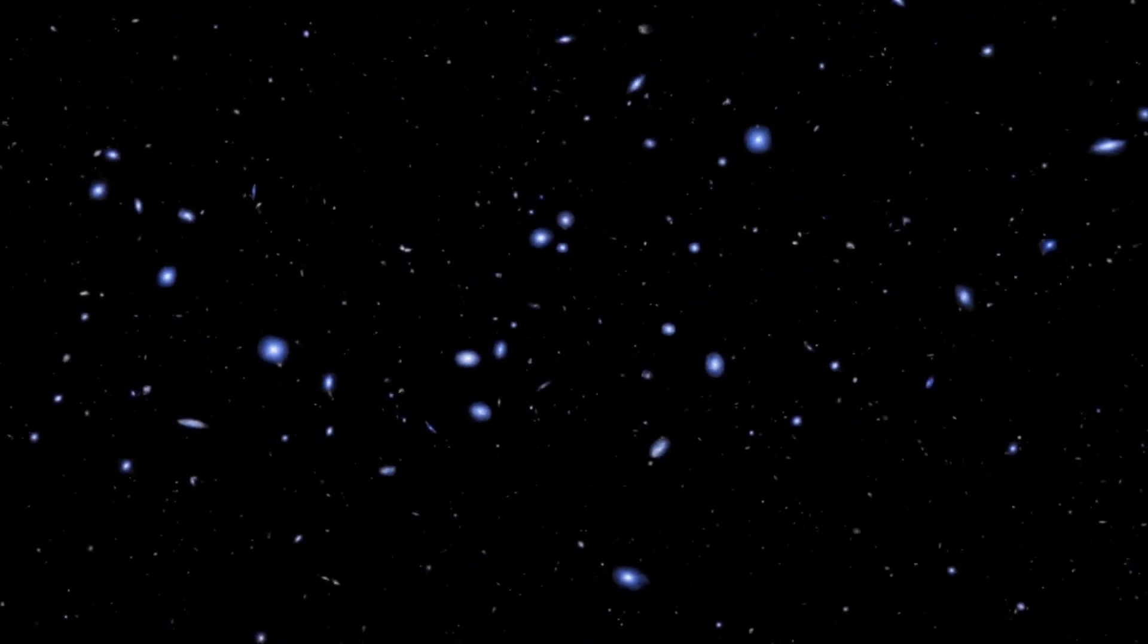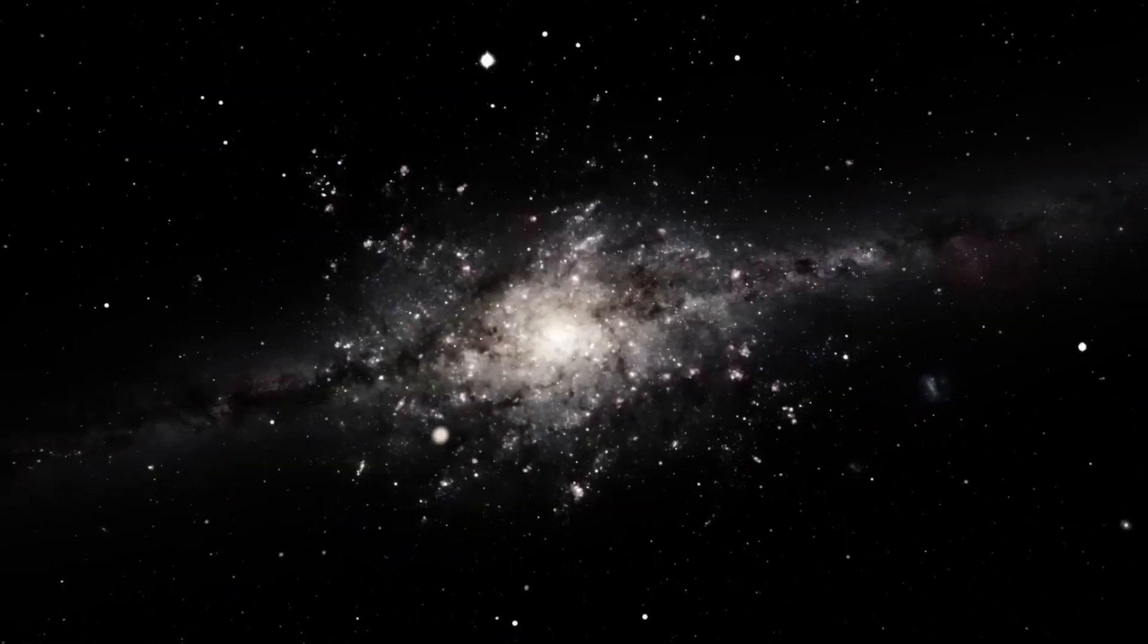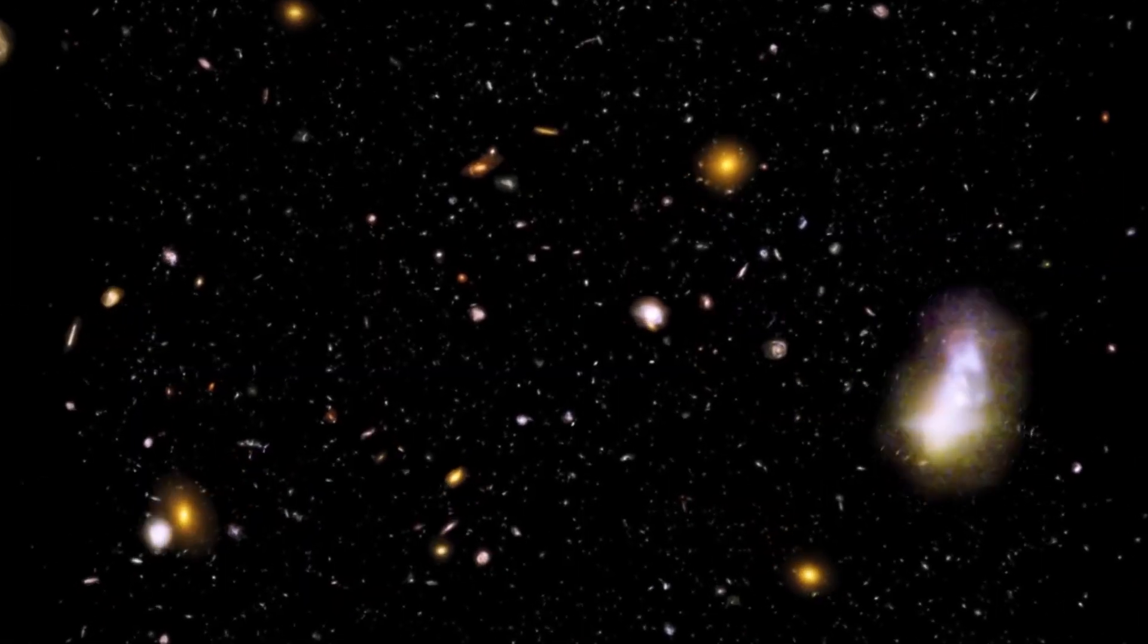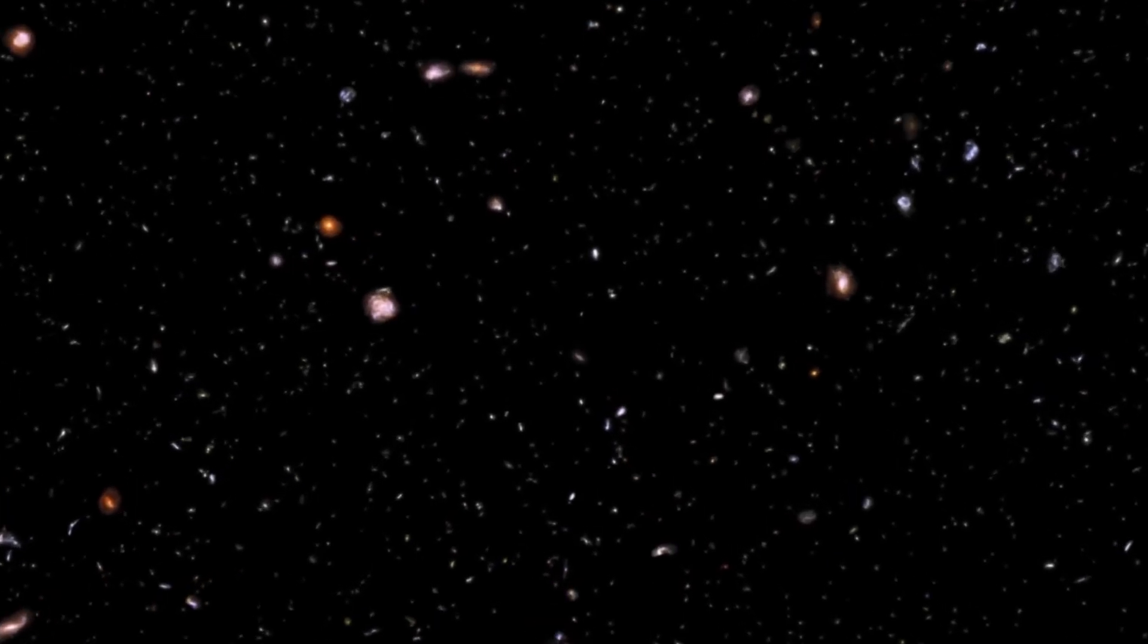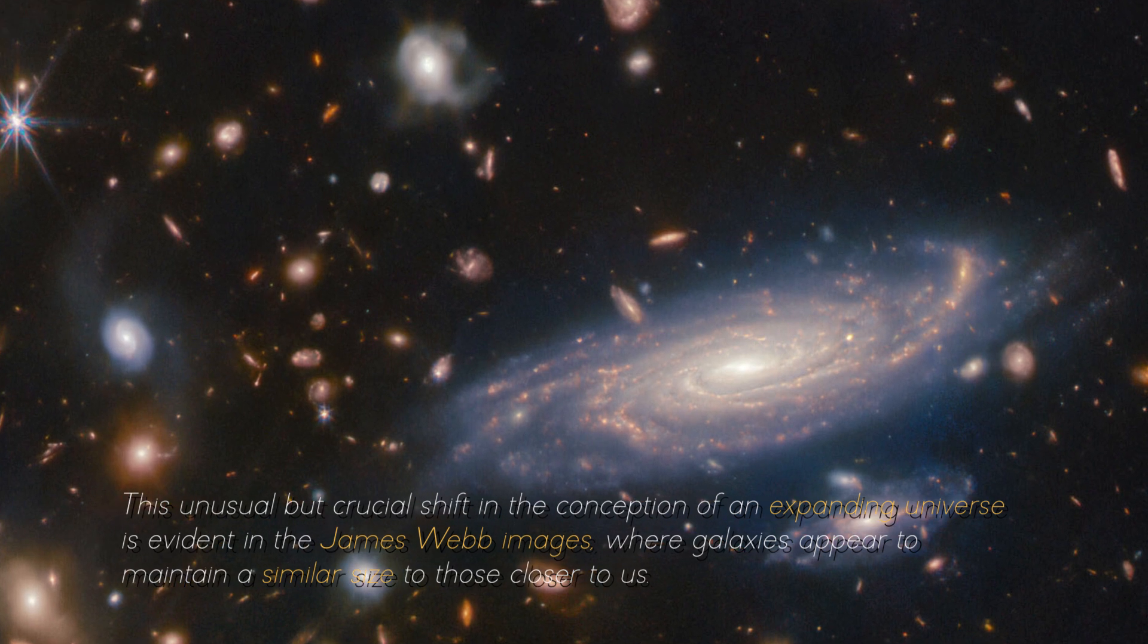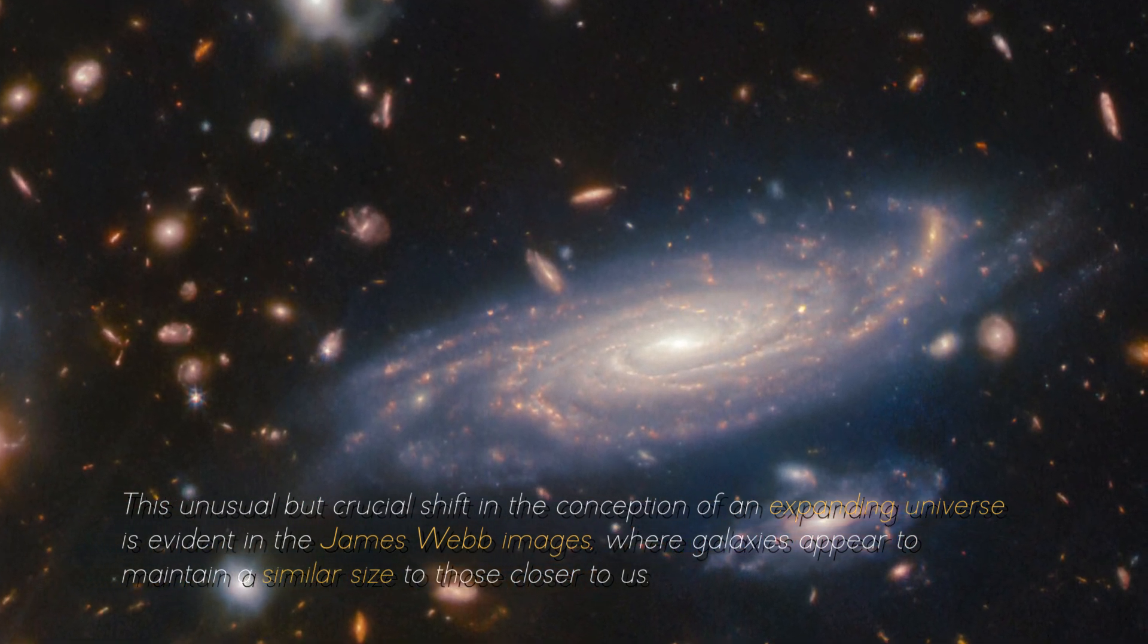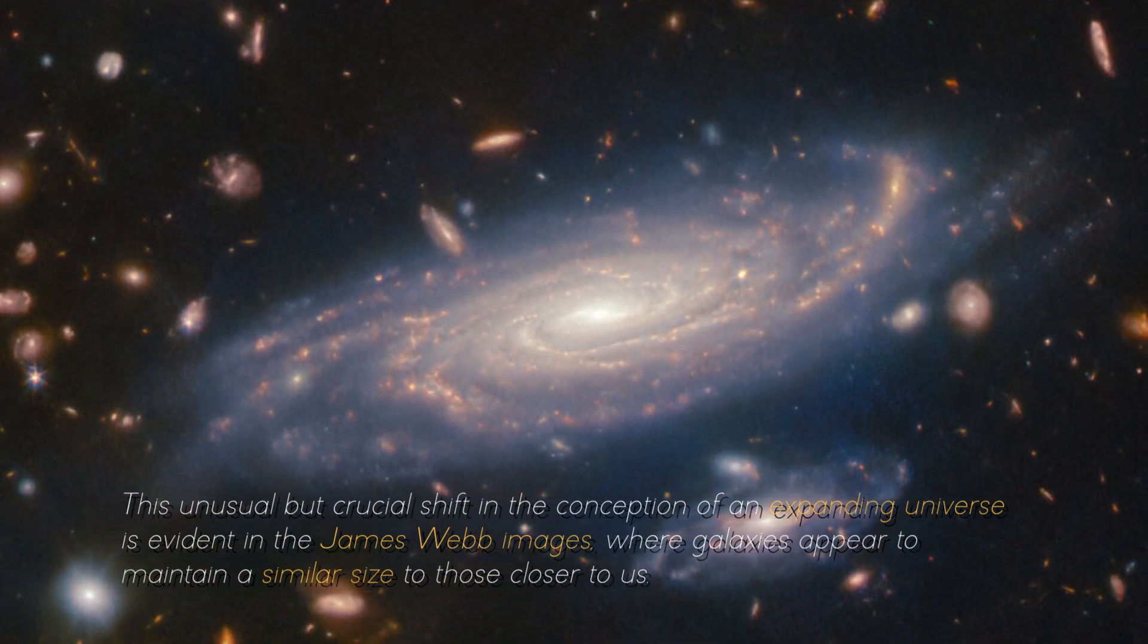To simplify these discrepancies, imagine the universe as an expanding globe. According to conventional theory, galaxies should not appear smaller as they move away from us. At a certain point, they should begin to appear larger since their light would have had to travel from when they were closer. This unusual but crucial shift in the conceptions of an expanding universe is evident in the James Webb images, where galaxies appear to maintain a similar size to those closer to us.